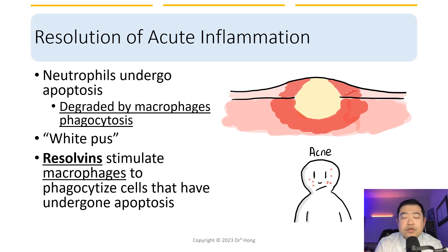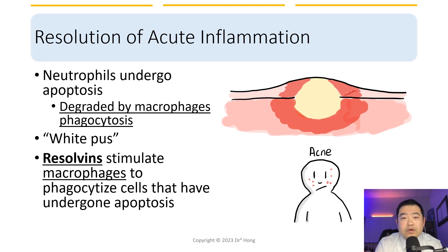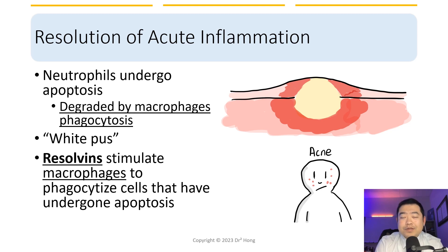This lecture concludes all the basic principles related to the innate immune system. We'll take a small break for a week, and in the next video in this series, we are going to look at adaptive or acquired immunity. Until then, please take care. I'll see you next time. Bye.